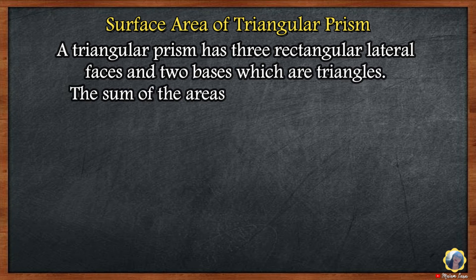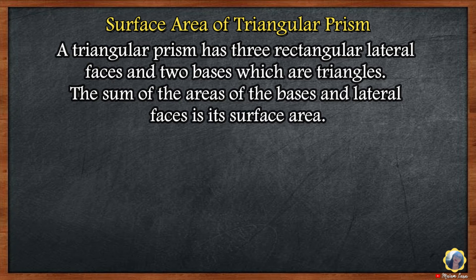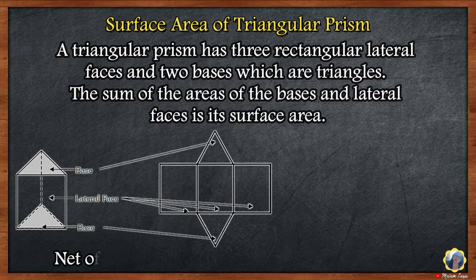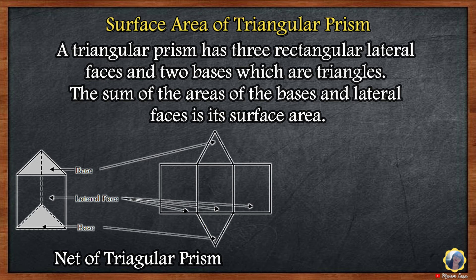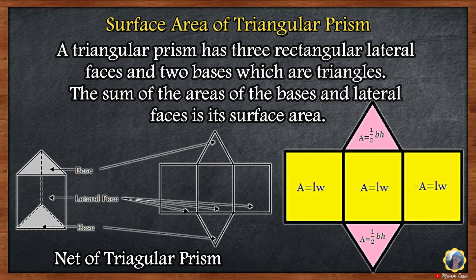A triangular prism has three rectangular lateral faces and two bases which are triangles. The sum of the areas of the bases and lateral faces is its surface area.